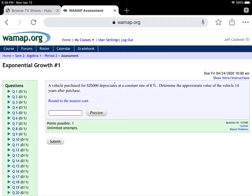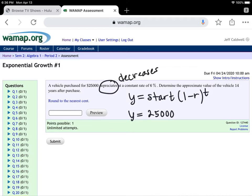In this question, they use the word depreciate. And depreciate, again, is another way of saying it decreases. So it's the same form as the last one. Y equals start times 1 minus r because we're decreasing, to the power of t. So using these numbers, a car that starts off at $25,000, if it loses 6% per year, 1 minus 0.06, what would it be worth after 14 years?